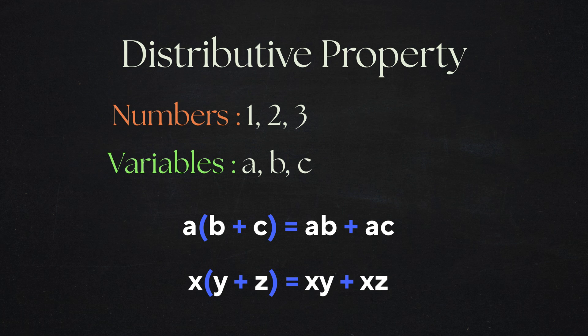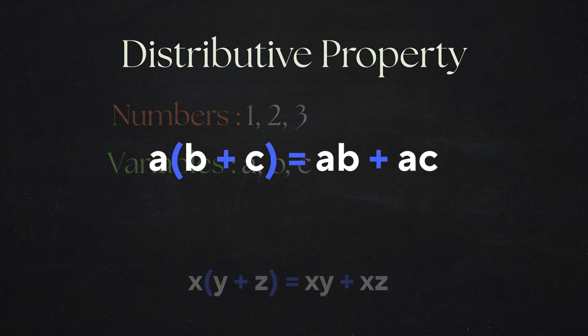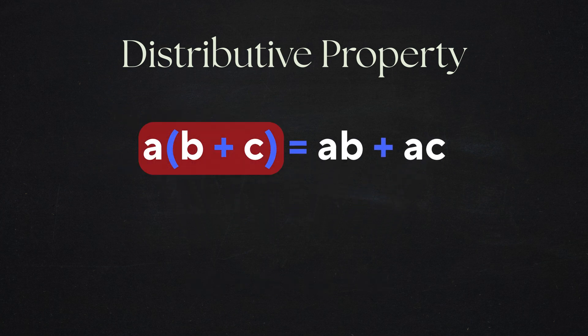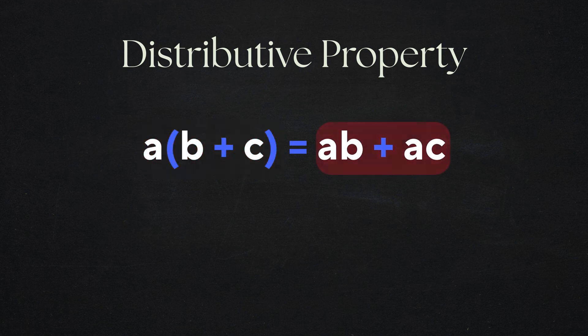This pattern tells you that these two forms are equal. In the first form, the factor a is being multiplied by the entire group b plus c. In the second form, the factor a has been distributed, meaning it's multiplied by each term in the group separately.